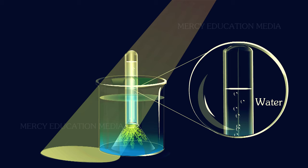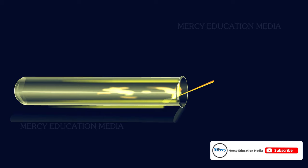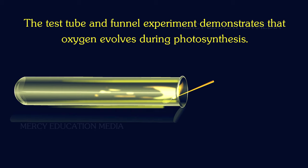The gas is tested for oxygen. When a burnt splinter is taken near the mouth of the tube, it glows brightly and proves that the gas is oxygen. Thus, the test tube and funnel experiment demonstrates that oxygen is evolved during photosynthesis.